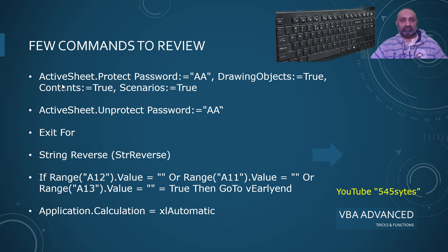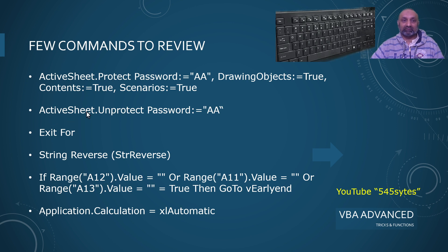Our first command is activesheet.protect password. DrawingObjects is equal to true, Contents is equal to true, and Scenarios is equal to true. This command protects your active sheet. To unprotect, the command is activesheet.unprotect password is equal to double a. So this command will protect and this will unprotect. The third command is exitfor.